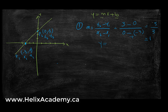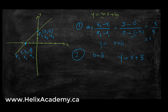Therefore I have y equals x plus b. The next step is to find b — where my line intersects the y-axis. It intersects at 3, so b equals 3 and my equation is y equals x plus 3. To verify: if x equals 0, y is 3, and if x equals negative 3, y equals 0. That checks out.